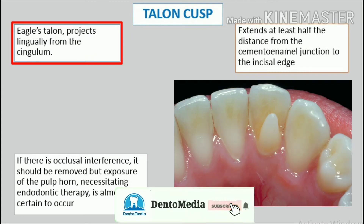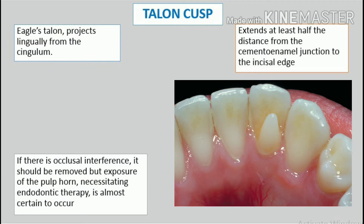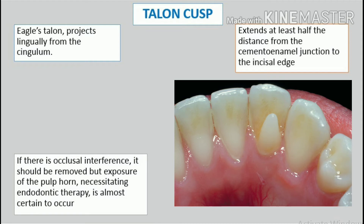Talon cusp. The talon cusp, an anomalous structure resembling an eagle's talon, projects lingually from the cingulum areas of a maxillary or mandibular permanent incisor. It extends at least half the distance from the cementoenamel junction to the incisal edge. If there is occlusal interference, it should be removed, but exposure of the pulp horn, necessitating endodontic therapy, is almost certain to occur.